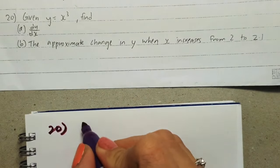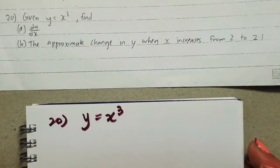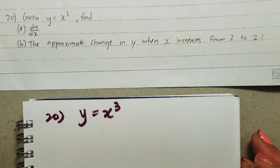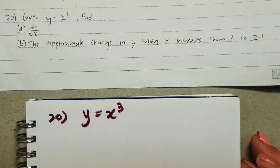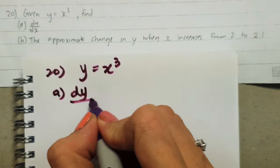Alright, question number 20. We are given a function y equals x cubed, and we need to find the differentiation dy/dx and also the approximate change in y. This is the fourth application of differentiation.